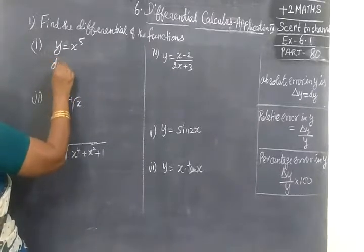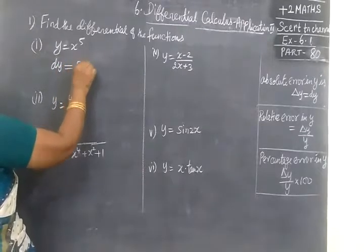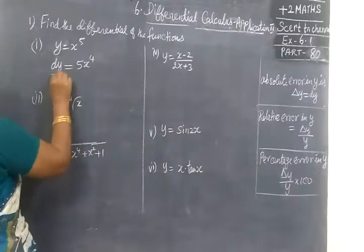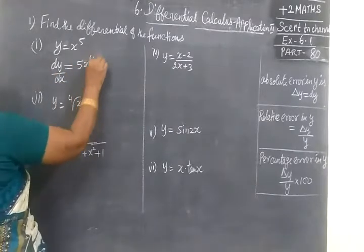So dy by dx, dy equal to 5 into X power 5 minus 1 is 4. We have y dx over here. This we are writing here.